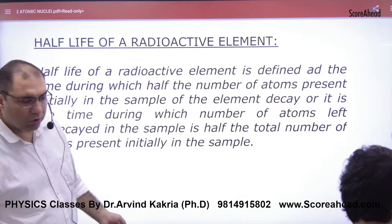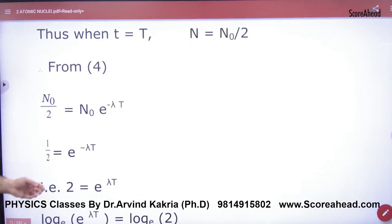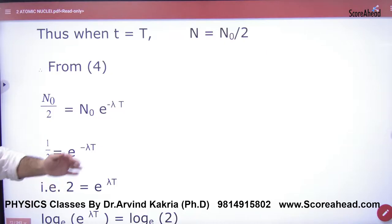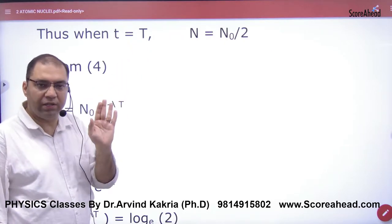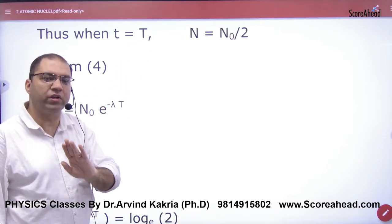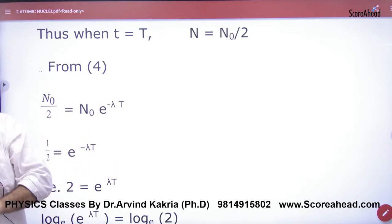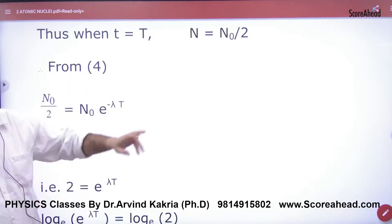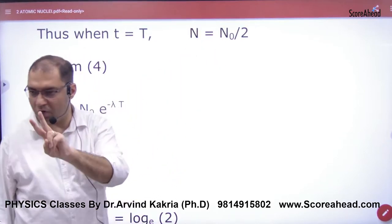So in the half-life period, how does it become? When small t is capital T, half-life period is represented by symbol capital T. So when small t is capital T, how many atoms are left? N0 by 2.